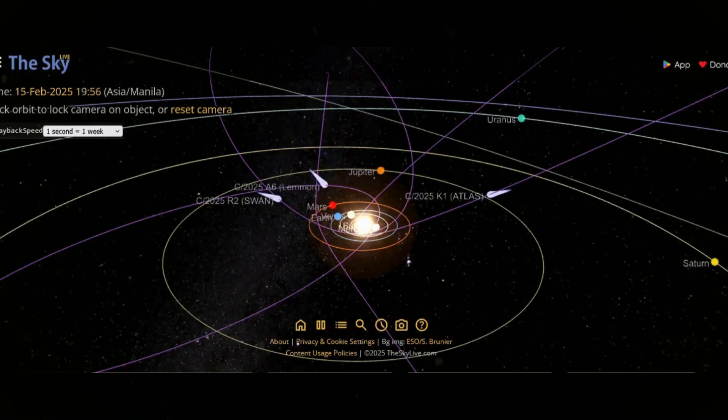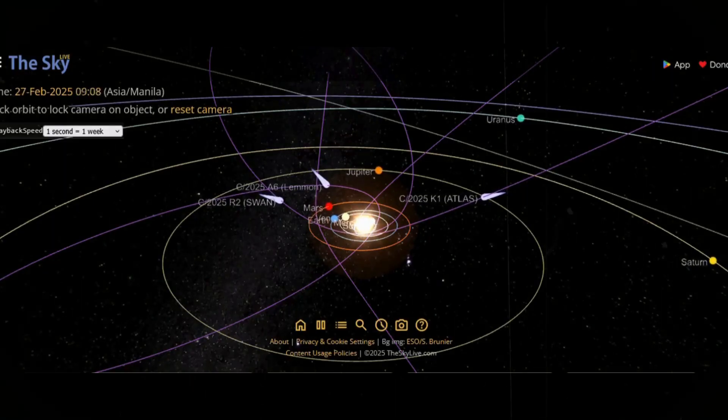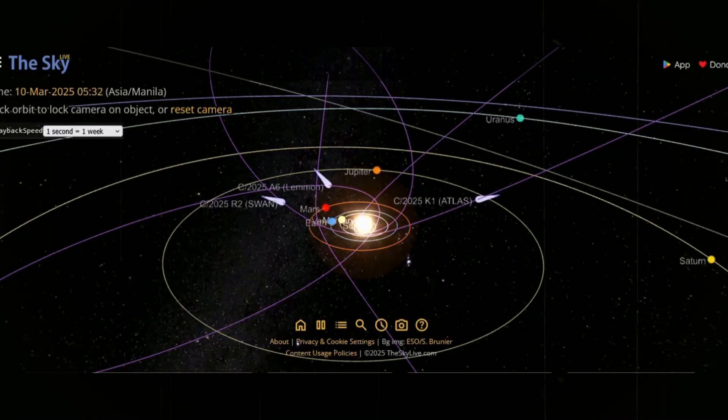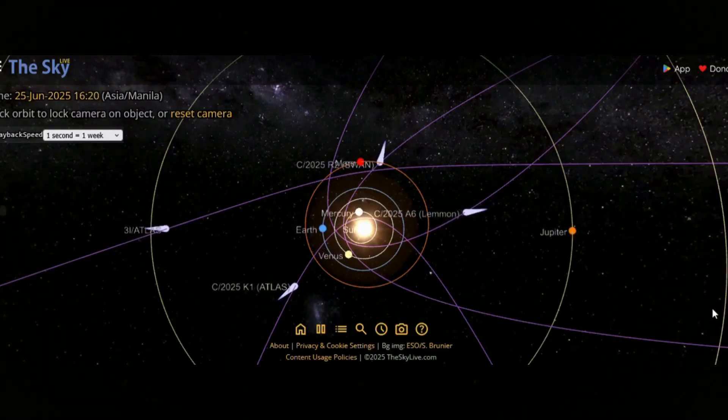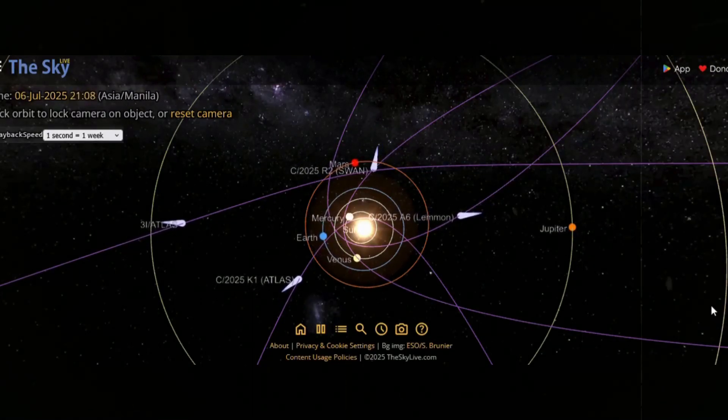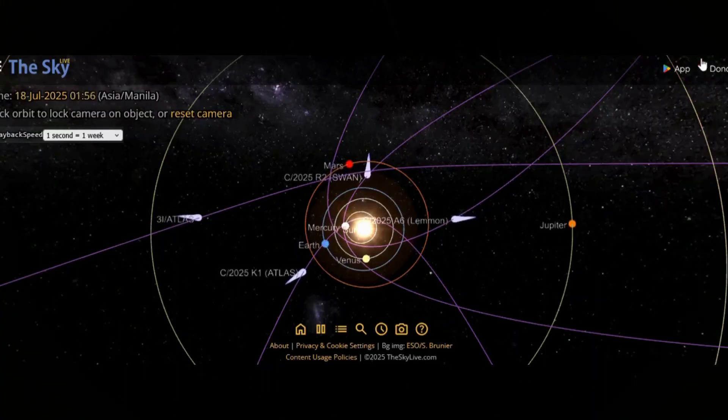Now imagine not one, but several comets releasing such streams simultaneously. Their tails stretch for millions of kilometers, brushing against invisible fields that extend from the Sun to the far reaches of the solar system.